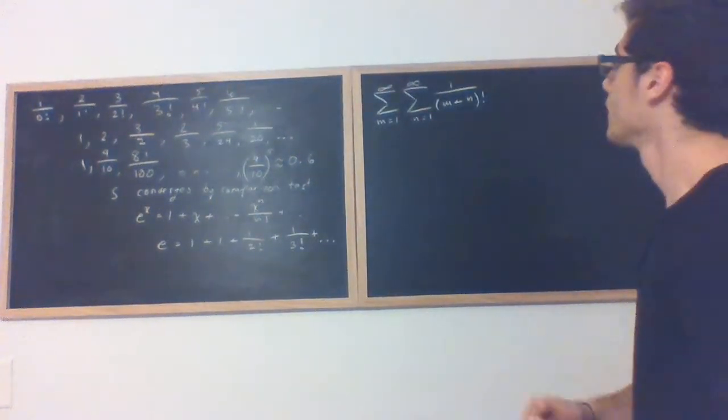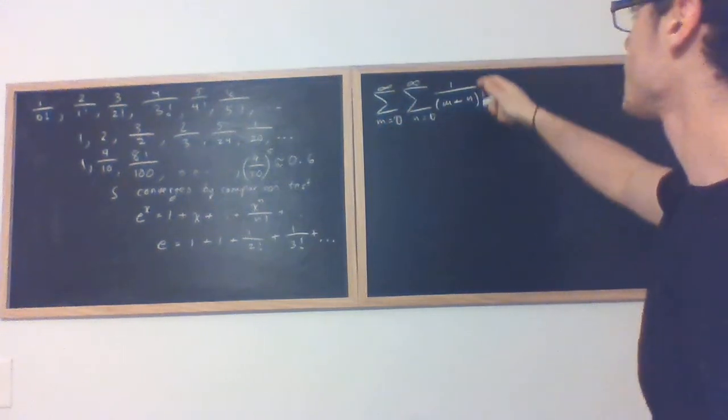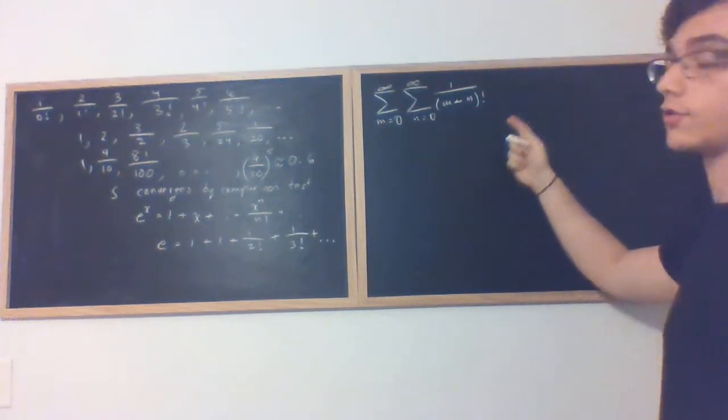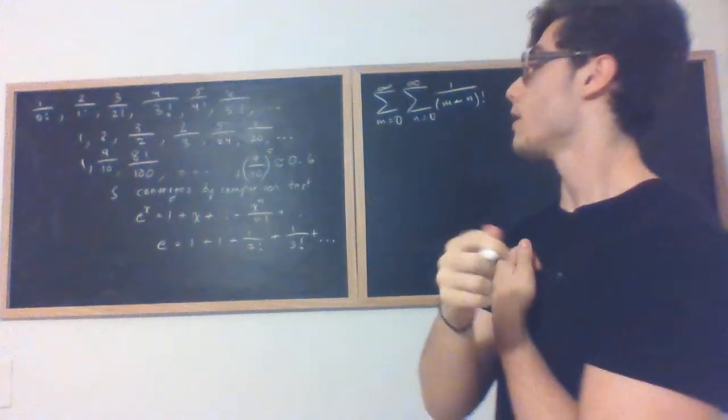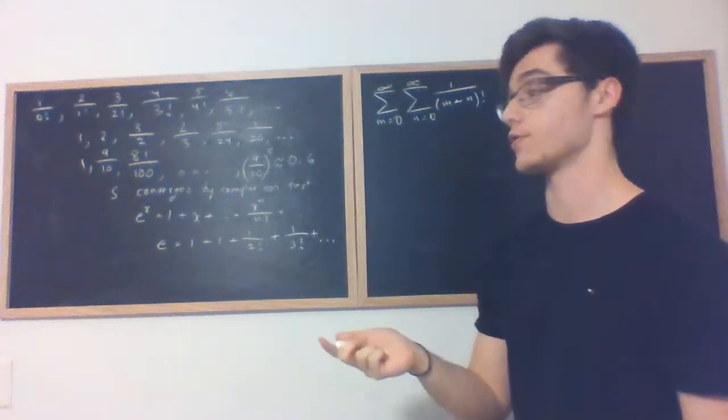All right, we are going to consider the double sum over the non-negative integers of 1 over m plus n factorial. First we will manipulate it a little bit, then we will show its convergence, then we will find the value to which it converges exactly.